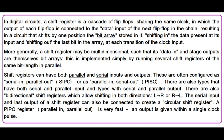Shift registers can have both parallel and serial inputs and outputs. These are often configured as serial in, parallel out (SIPO), or as parallel in, serial out (PISO). There are also types that have both serial and parallel input and types with serial and parallel output. There are also bidirectional shift registers which allow shifting in both directions, left-to-right or right-to-left. The serial input and last output of a shift register can also be connected to create a circular shift register.